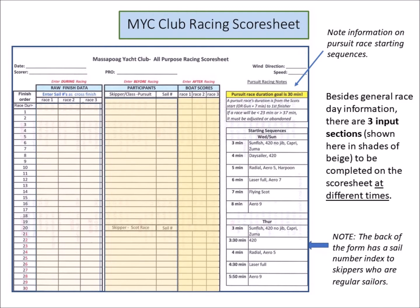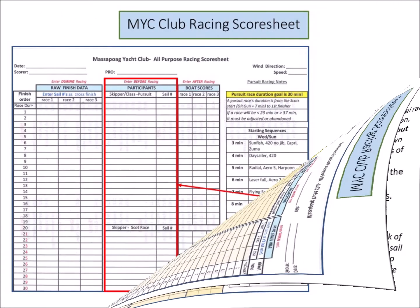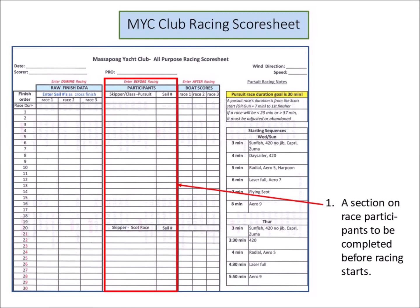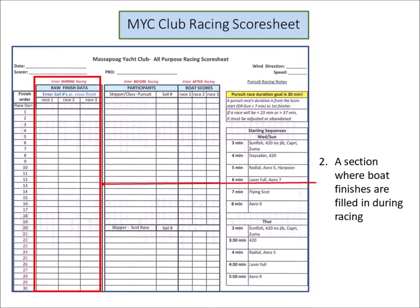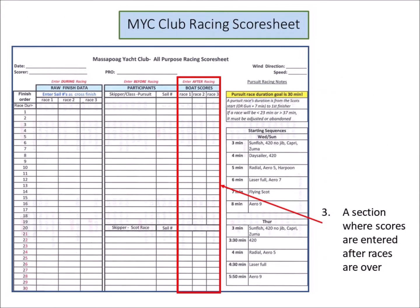Also, the back of the form has a list of regular sailors and their boat numbers. The area of the form for input, shown on this slide in shades of beige, is comprised of three main sections to be completed by the finish taker at different points in the racing day. One: the middle section for data on whoever shows up to race should be completed before racing begins. Two: the left section is used to record boat finishes for each race conducted. Three: the right section should be completed after or between races and contains the scores for each racer.